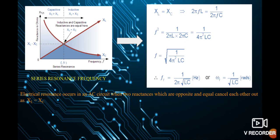By intersecting the two graphs of XC and XL we obtain an intersection point giving the resonant frequency, where XL equals XC. Before the resonant frequency, the XC graph has a higher magnitude than XL, so that part behaves in a capacitive manner. On the right hand side of the resonant frequency, XL is greater than XC, so it behaves in an inductive manner. In electrical resonance, when the two reactances are equal and opposite, they cancel each other out.